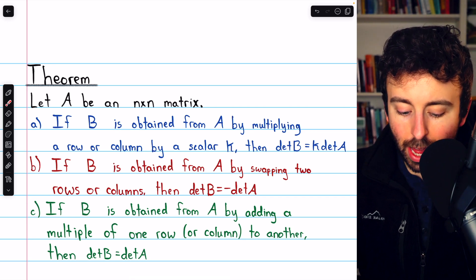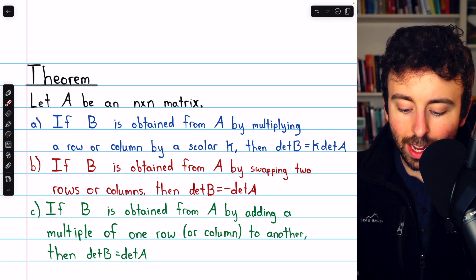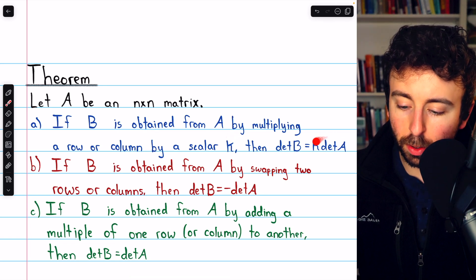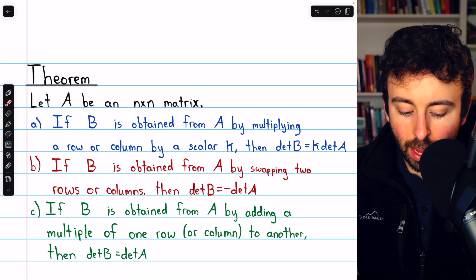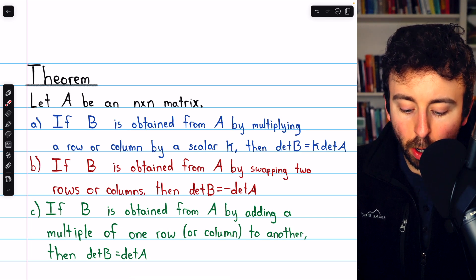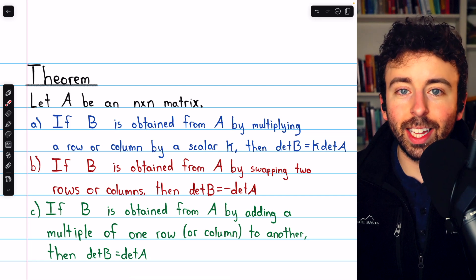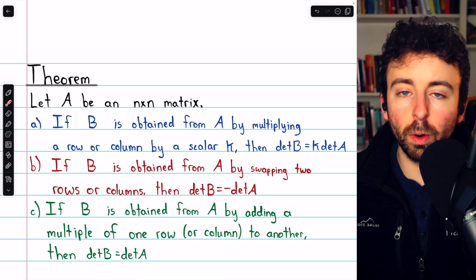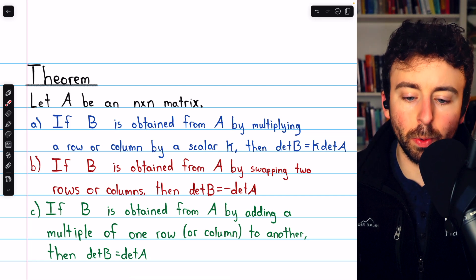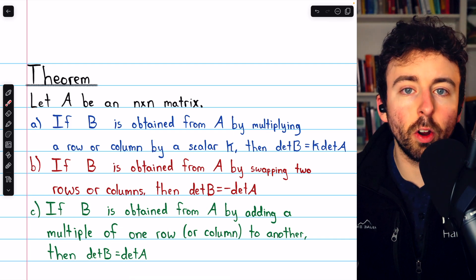If we multiply a row or column by a scalar k, then the effect is that the determinant has been multiplied by that scalar k. And if we swap two rows or columns, the effect is to negate the determinant. Finally, adding multiples of a row or multiples of a column to another row or column does not change the determinant at all.